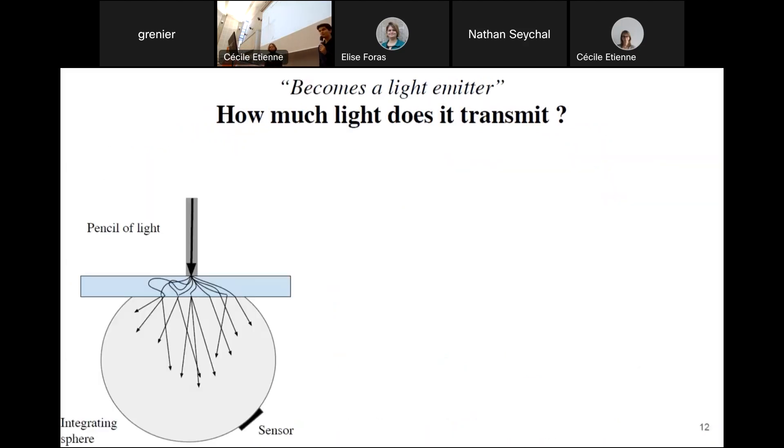And finally, let's investigate how much light is transmitted by the sample. So one way to measure the transmittance is to send a pencil of light and to collect all the transmitted light in an integrating sphere. By making the ratio of these two quantities, you have the transmittance between 0 and 1.